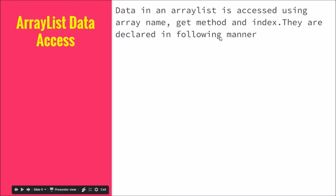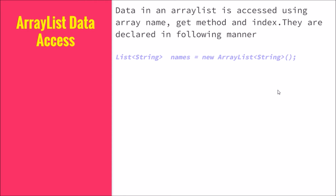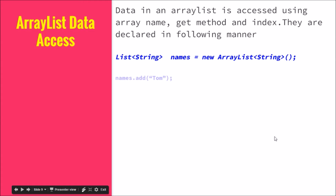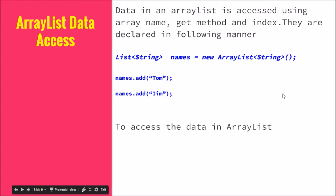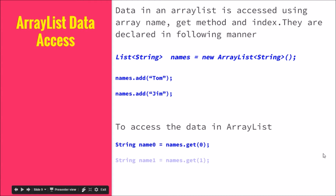For ArrayList, you use the get method. For example, 'names.get(0)' will retrieve the name at index zero — in this case it will return 'Tom'. Similarly, 'get(1)' will return 'Jim', and so on. So that was the difference in how to access the data between arrays and ArrayLists.